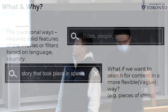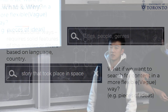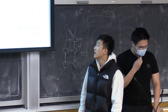The traditional ways of content searching require solid features like titles and genres. But sometimes people know exactly what they want to watch, and sometimes they only have a vague idea in mind. So we built a model that allows people to do movie searching in a more flexible way.